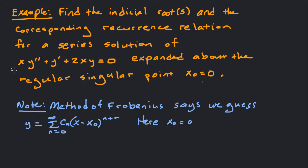So why is this a regular singular point? It's a singular point because x=0 makes the leading coefficient 0. When we divide through, we see it satisfies the definition of a regular singular point. So when we use a regular singular point as our point of expansion, we use the method of Frobenius to guess a solution of this form.